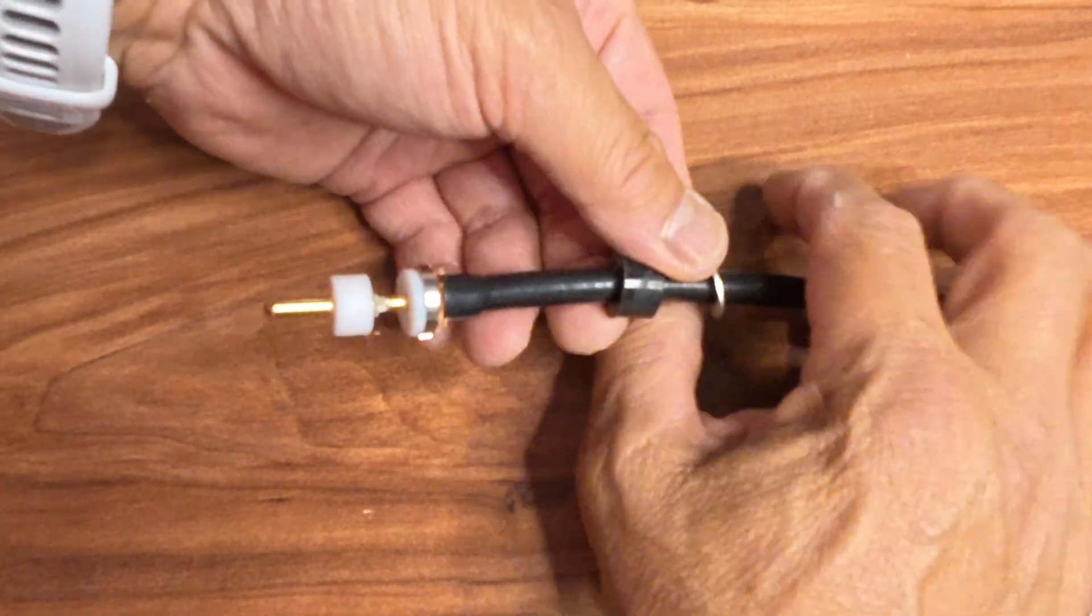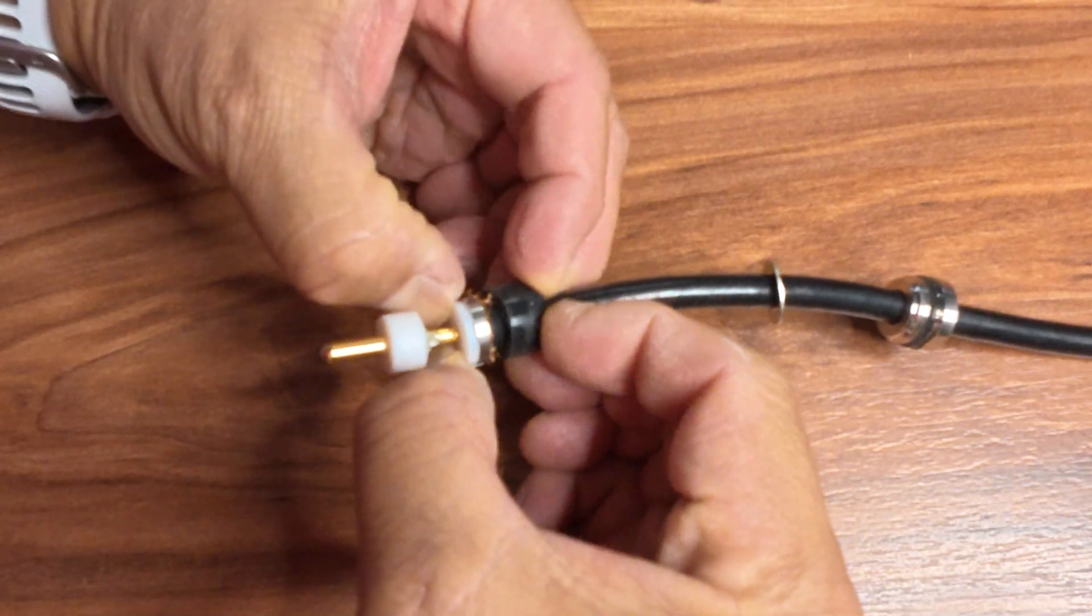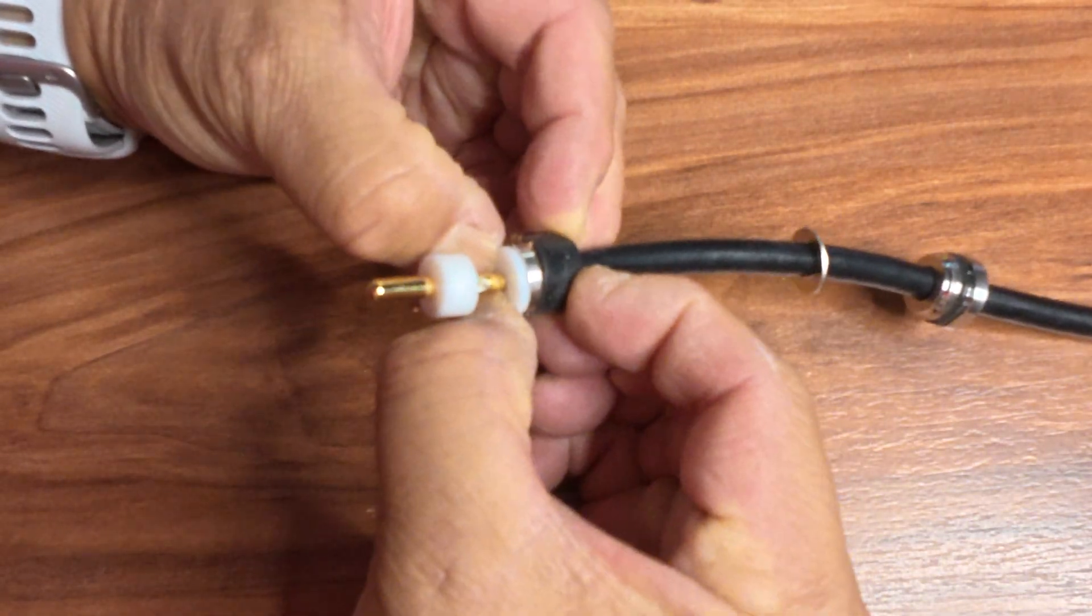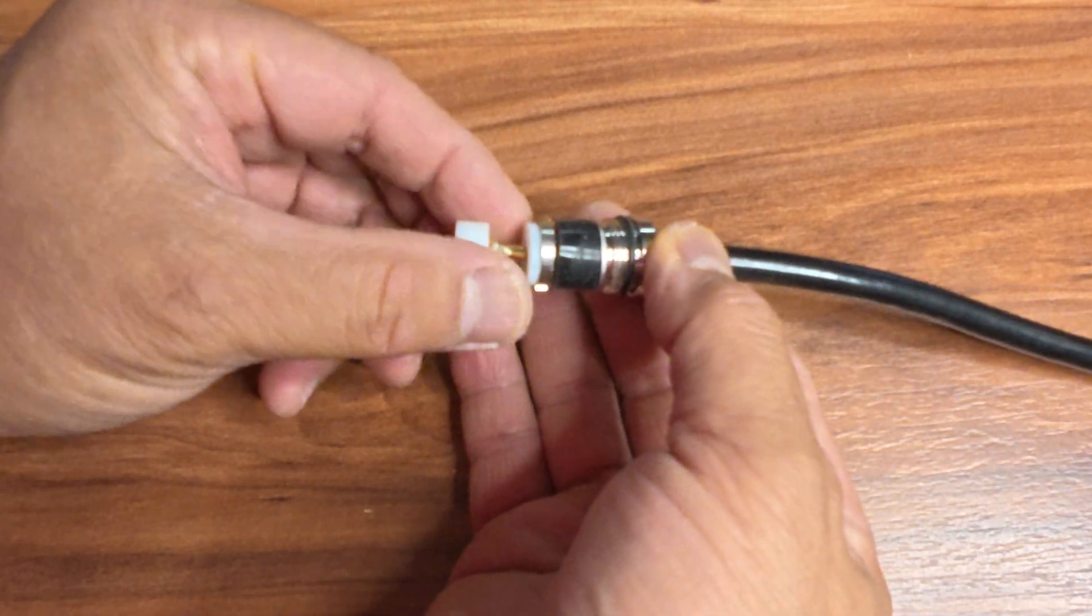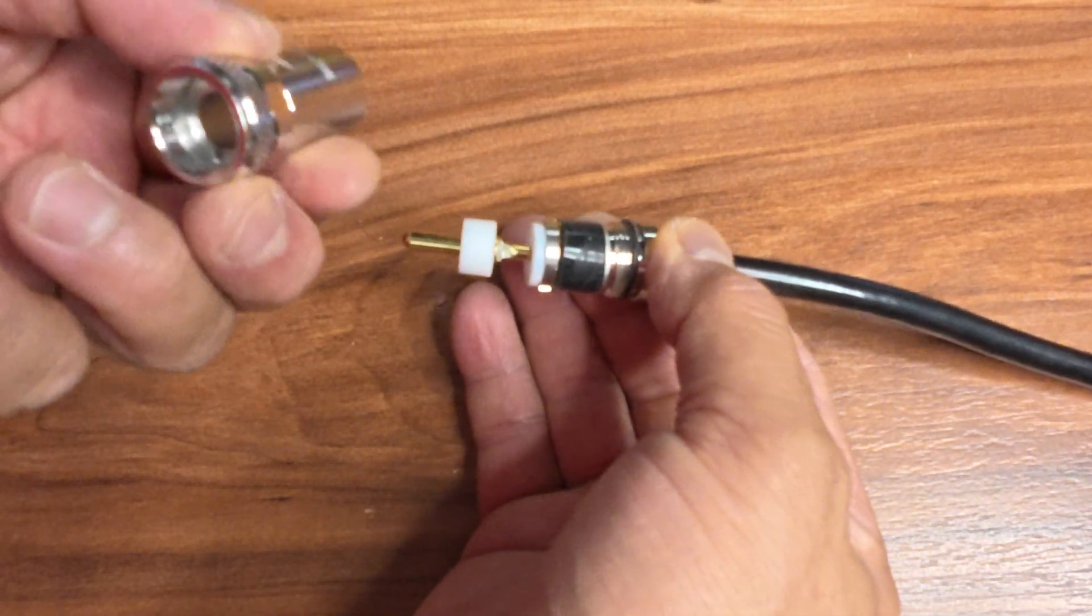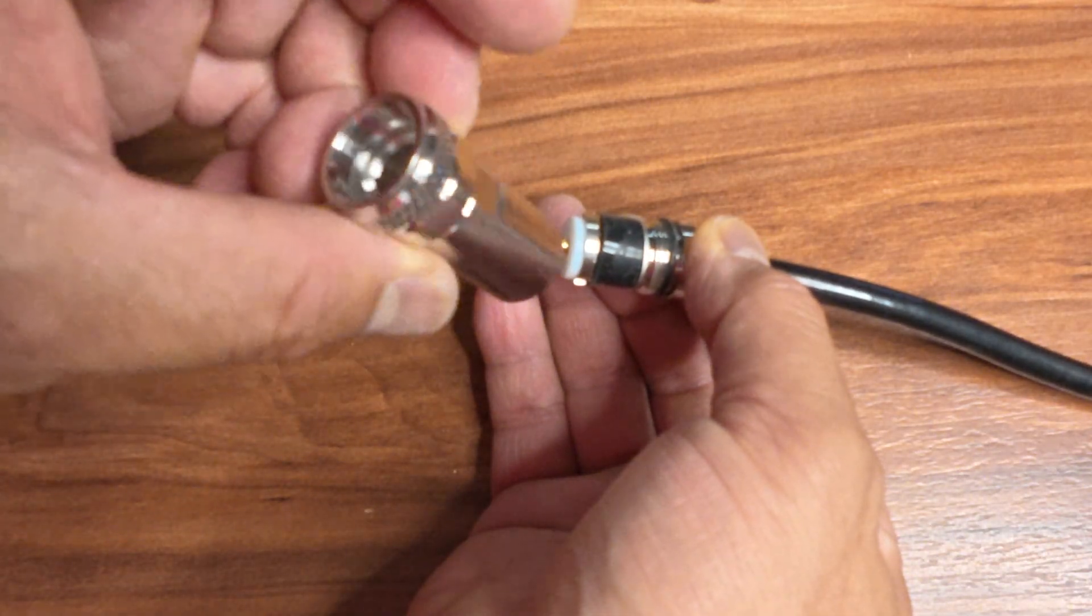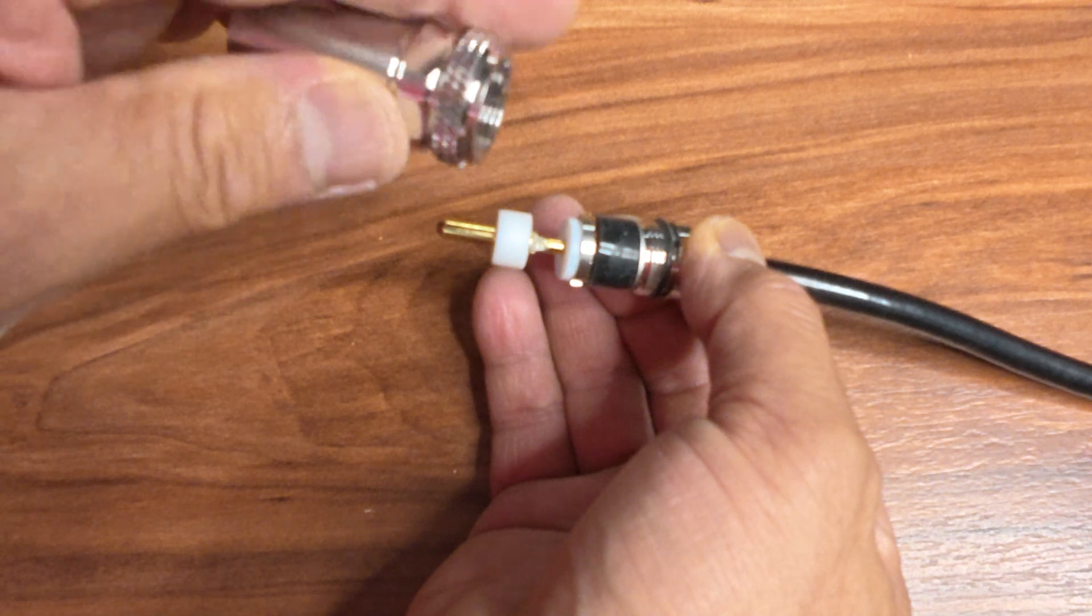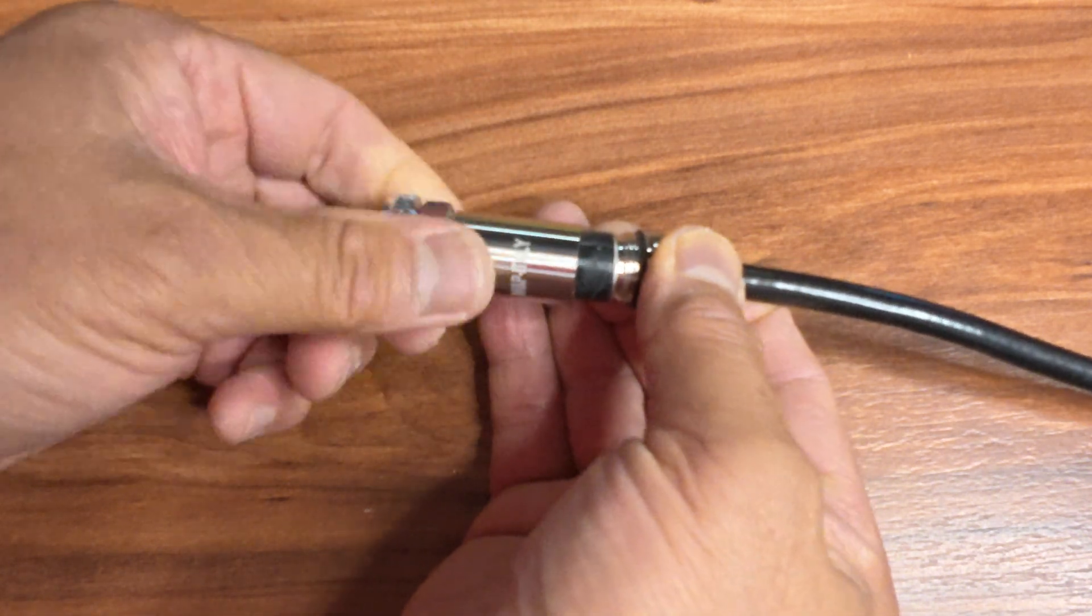I'm going to move this grommet up to the connector. Just like that. The steel washer. And then the back end. And I'm going to take the main outer connector. And we're going to screw that in.